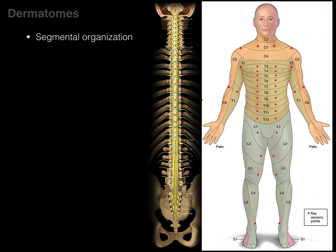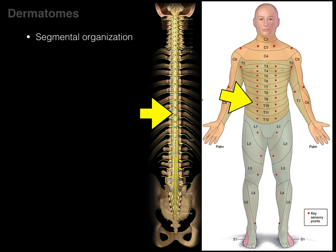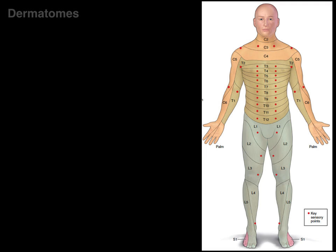Dermatomes have a segmental organization that's readily seen in the trunk, where you can see dermatomes stacked on top of each other, just like the spinal cord. It is organized in the upper and lower limbs the same way, just a little bit more complex. Due to the formation of skin, dermatome maps vary.